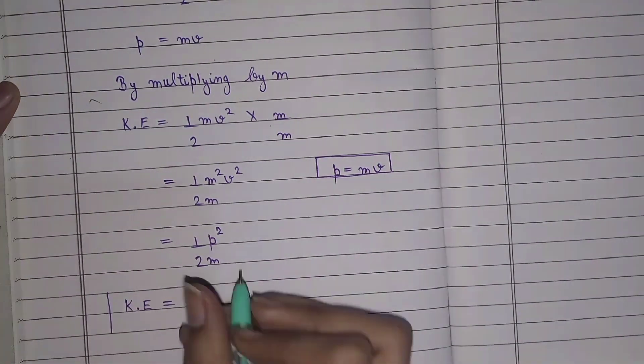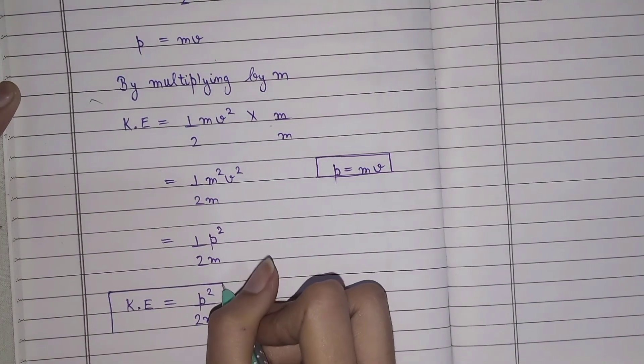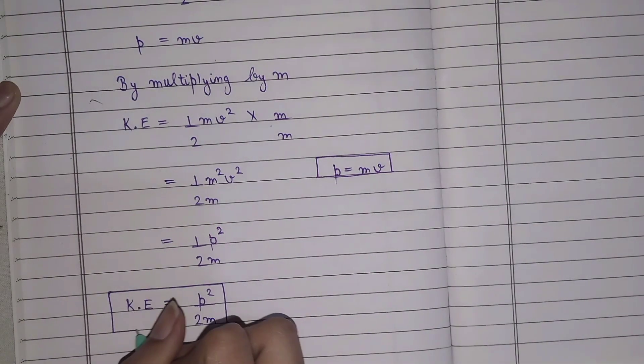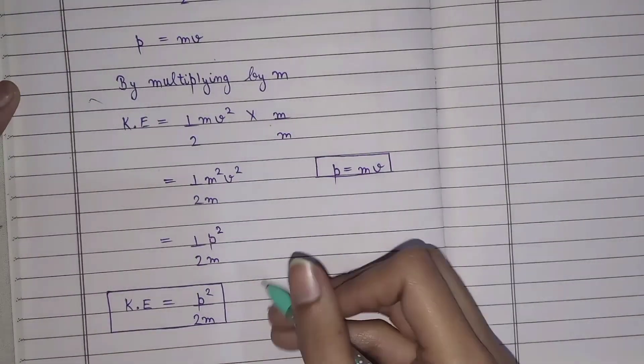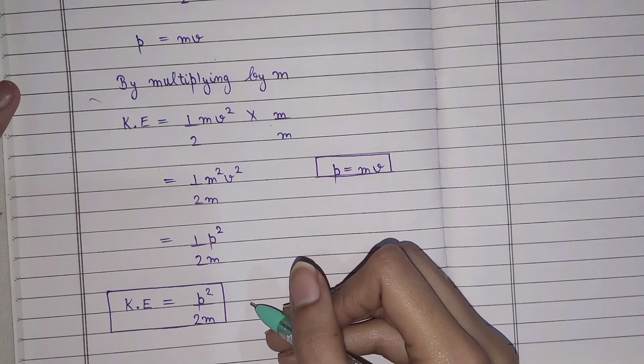We'll put this in a box. So this is the relation between kinetic energy and linear momentum: KE = p²/2m.